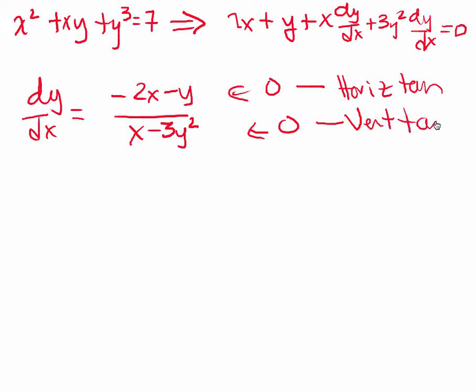So, well, this horizontal tangent seems not so bad. We say, okay, negative 2x minus y equals 0, or y equals negative 2x.